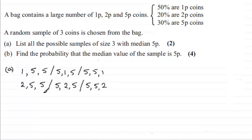There is another way that we could have a median of 5 and that is if all the coins picked out were 5p coins. But that would be the only combination that we could have. So there's our possible samples of size 3 which would have a median of 5p.